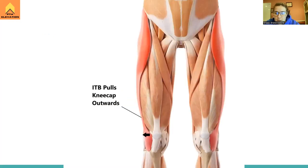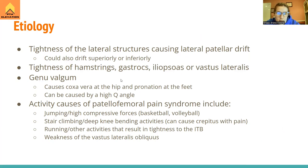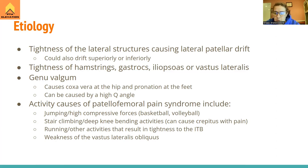With genu valgum, there is stretching of the medial capsule of the knee and compression of the lateral aspect, causing more pain and tightness of the lateral structures. This can be caused by coxa vara at the hips — genu valgum at the knee tends to have the opposite alignment at the hip. Coxa vara involves an increase in the hip angle, and the elevated Q angle pushes everything over into genu valgum. It's all connected.